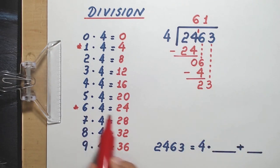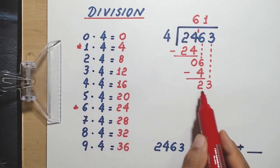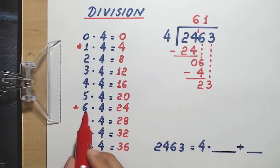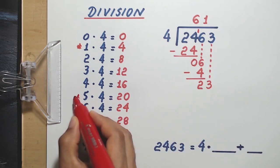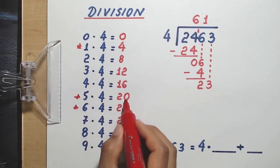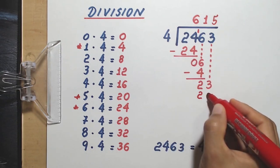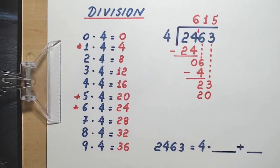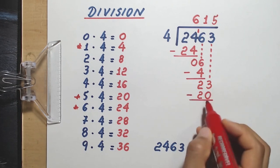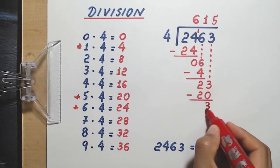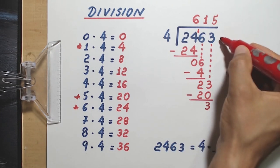Notice that 6 times 4 is 24, that goes over 23, so 6 is not the number. The number will be 5. 5 times 4 is only 20. I write 5 here. 5 times 4 equals 20. The 20 goes in this place, and we subtract. 23 minus 20 equals 3. And there is no other digit to bring down.